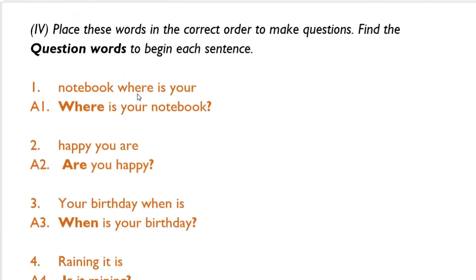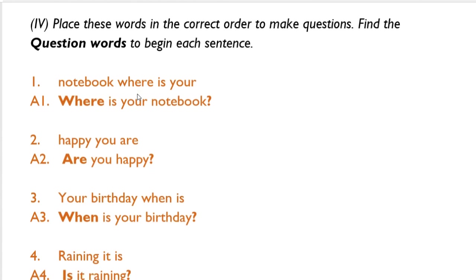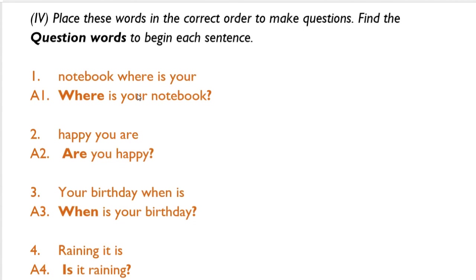Let's come to exercise 4. We have to place the words in the correct order and make a question. As we have learned today, every question begins with a question word and ends with a question mark. Number 1: Notebook where is your — this is a wrong sentence. We have to write it in the proper order. It is done for you: Where is your notebook? Where is the question word and we put a question mark to make it a question sentence.